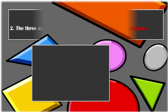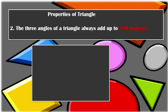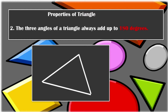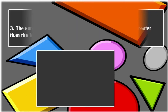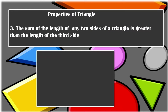The second property is that the three angles of a triangle always add up to 180 degrees. As you can see, the measurements of the angles of this triangle always sum to 180 degrees. The third property: the sum of the length of any two sides of a triangle is greater than the length of the third side.